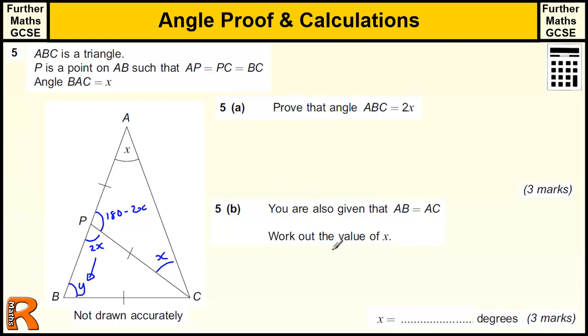Now we have to actually prove that. So we have to write that down in words. We can't just draw it on the diagram and say it's 2X. So we have to do things like this. Since triangle ACP is isosceles, angle ACP equals x. So that's how I worked out that angle is x.